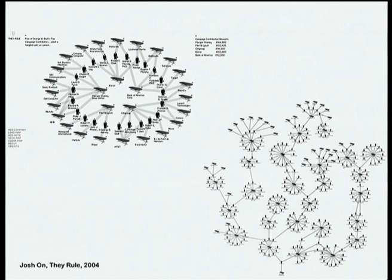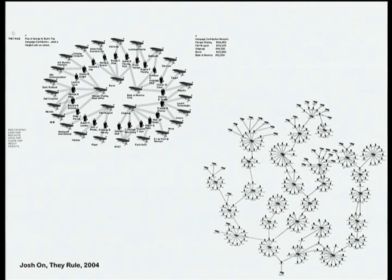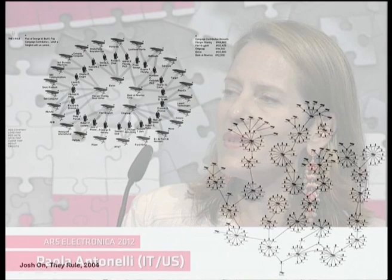Josh On's 'They Rule' site from 2004 is a great example of minimalism in data visualization — one of the first instances where the power of the internet was used to reveal previously near-secret connections. Josh took the main corporate boards in the United States and showed the connections between these boards and different parts of the U.S. government, revealing conflicts of interest and backroom dealings people did not know about before. It was really powerful and scared the bejesus out of many in the corporate world.